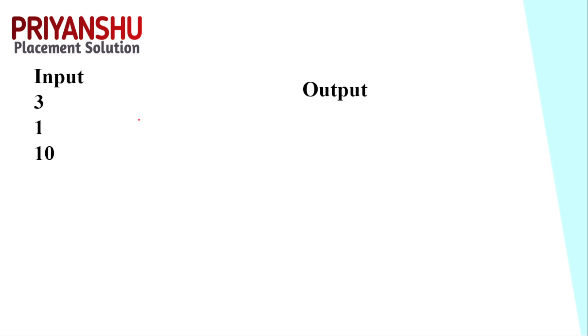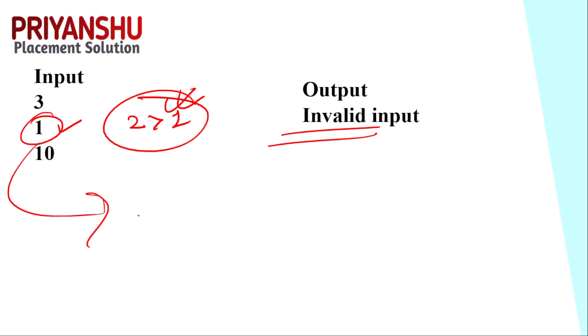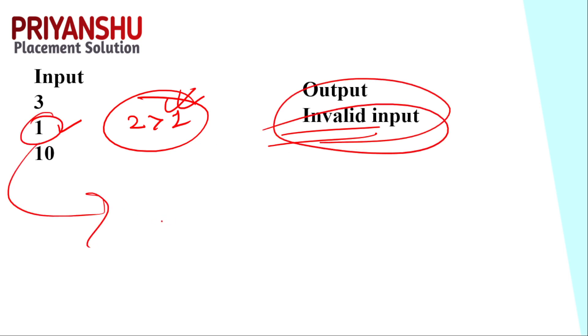The other test case: input is 3 lines, first line has 1 word and second line has 10 words — wait, actually input is first=10, second=1. The output is 'Invalid Input' because the condition says the second line must be greater than the first line, but here that condition is false, so the output is invalid input.